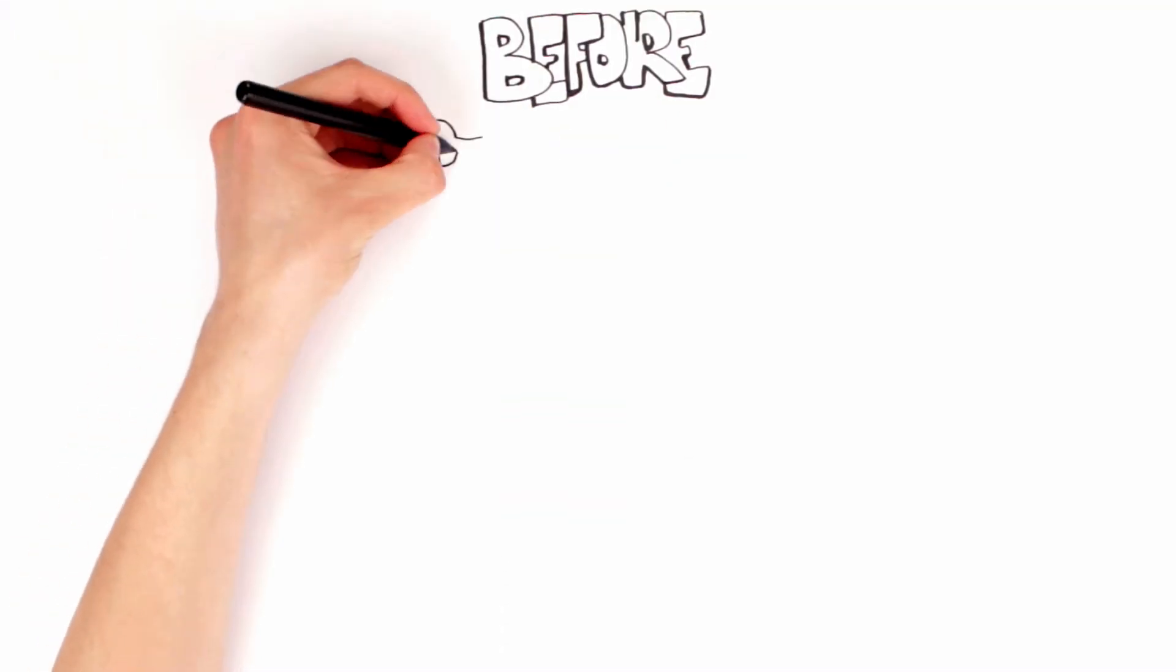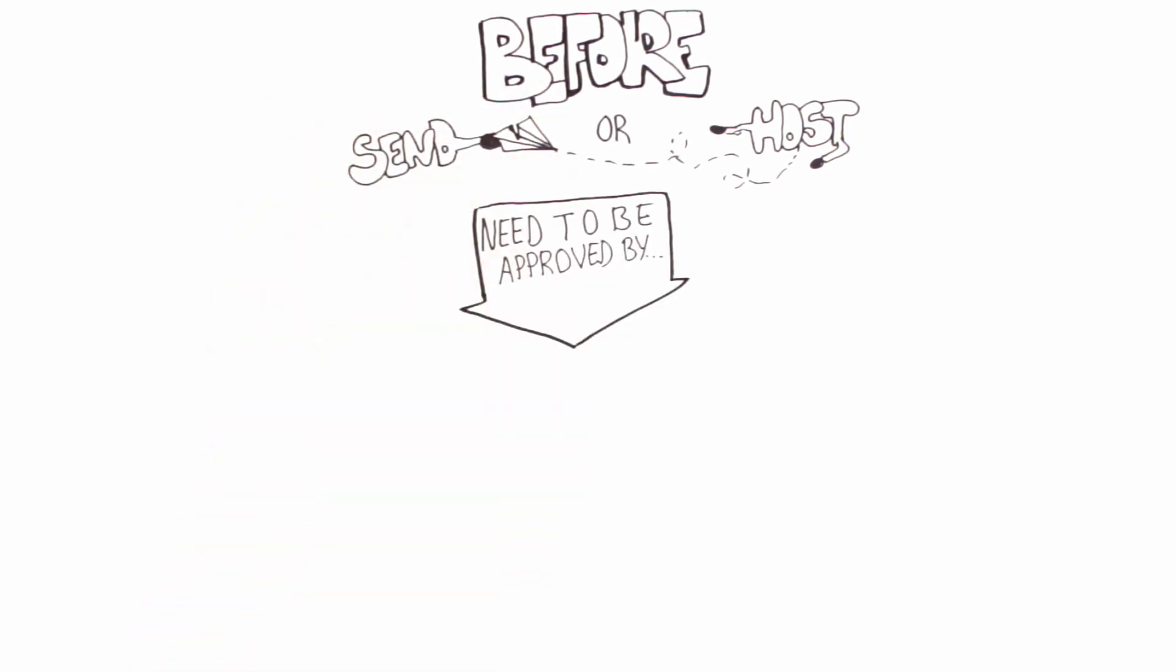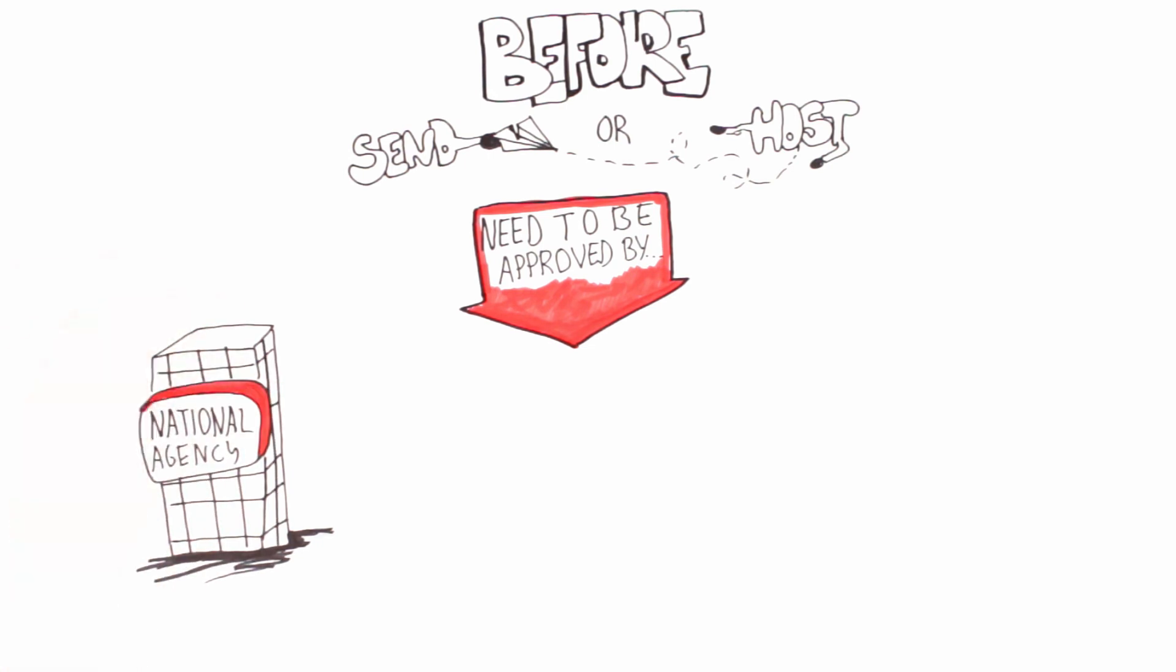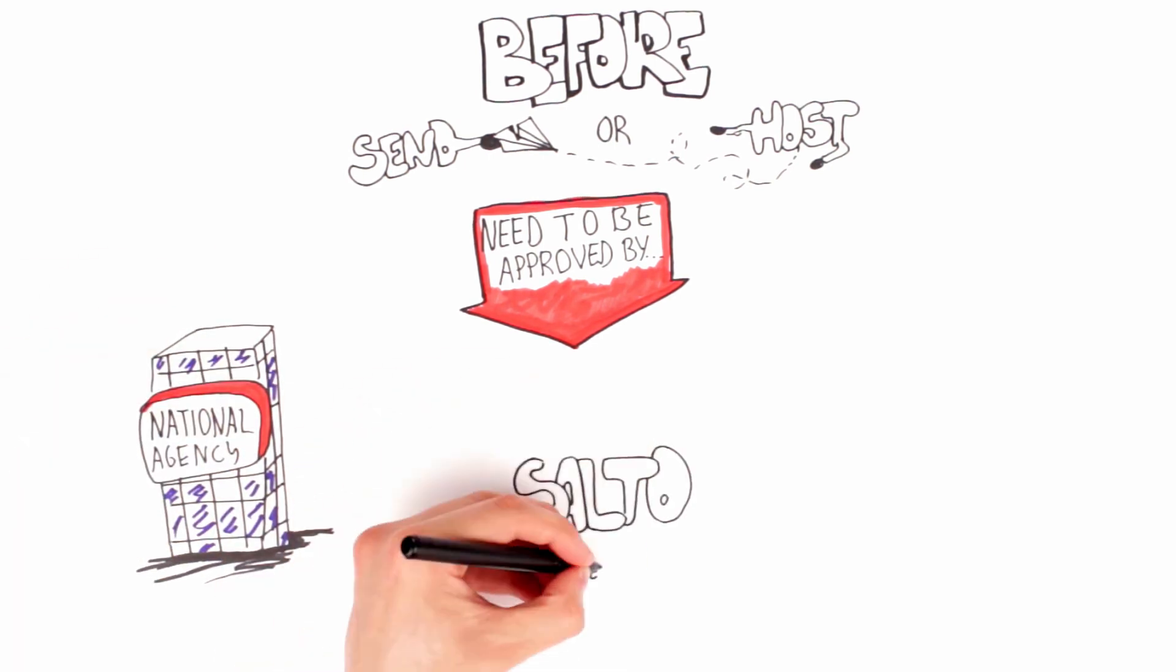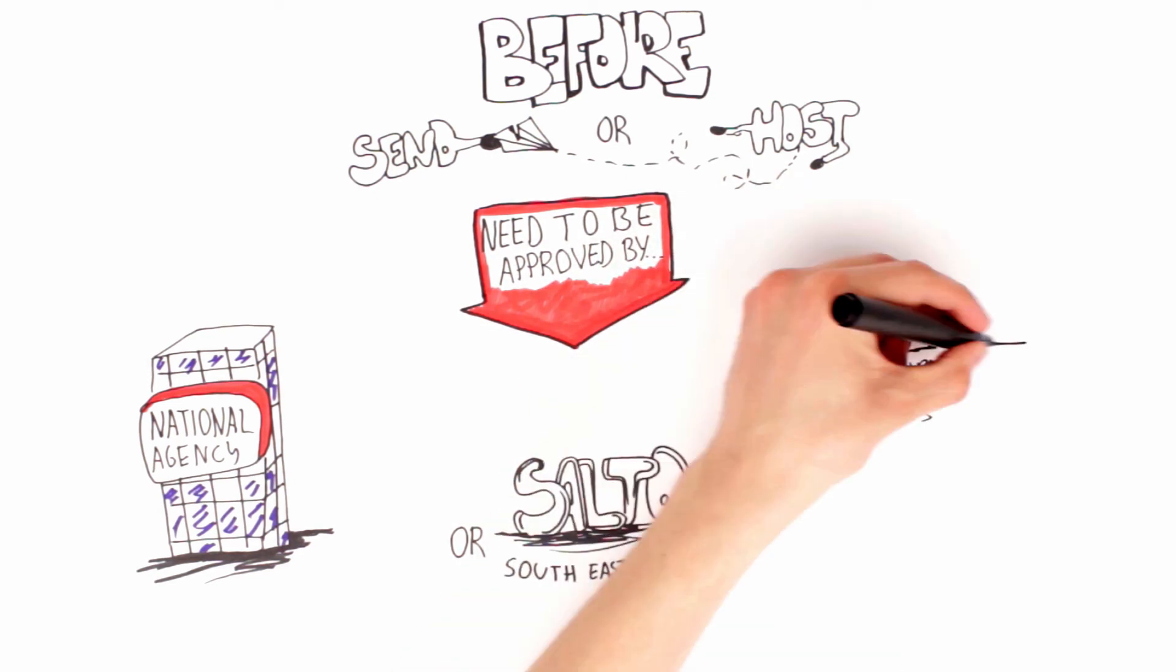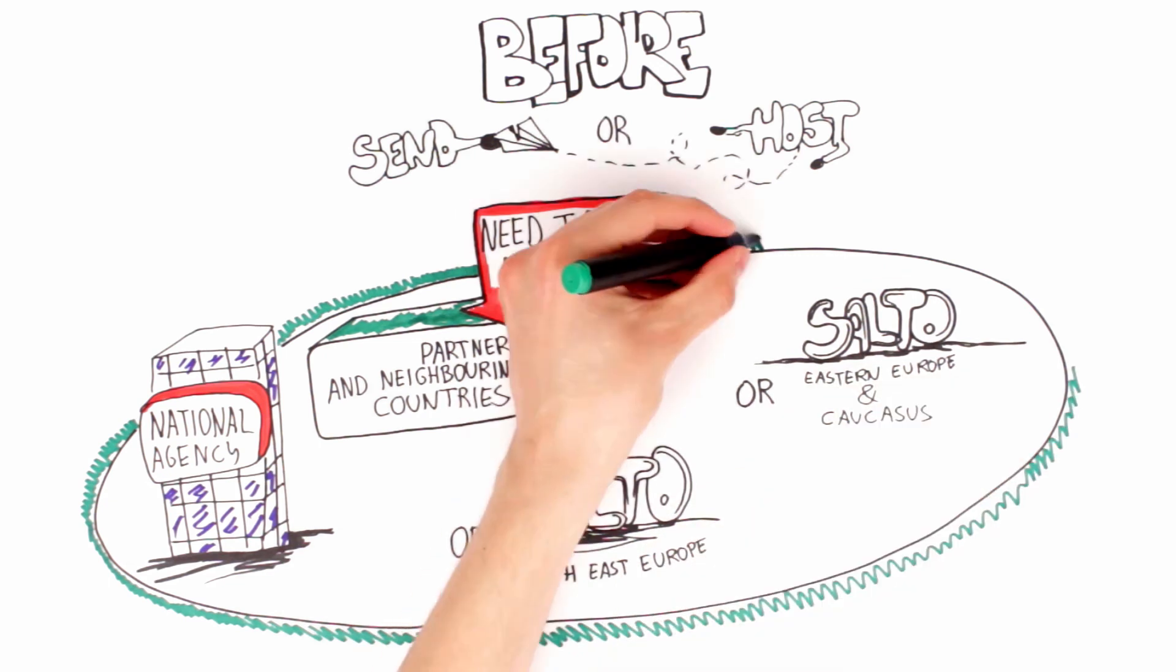The accreditation process. Before an organization can send or host EVS, they need to be approved by their national agency or SALTO Southeast European or SALTO Eastern Europe and Caucasus for partner and neighboring countries. This process is to ensure you have the competencies and facilities to send or host volunteers in the best possible conditions.